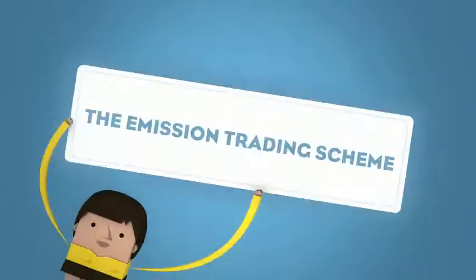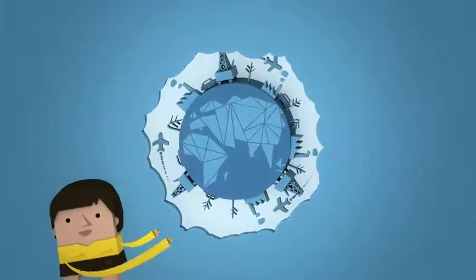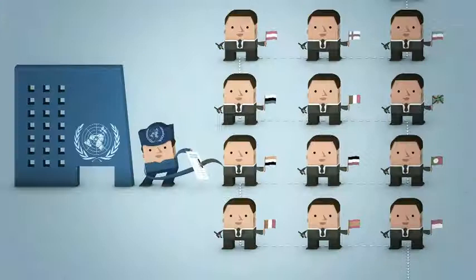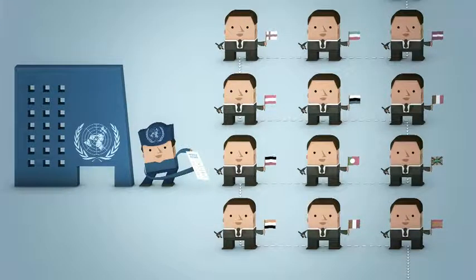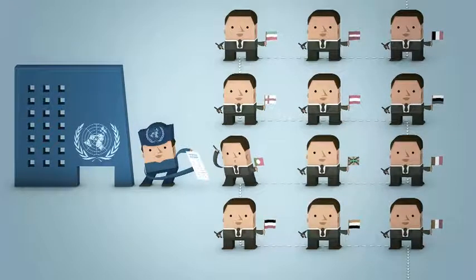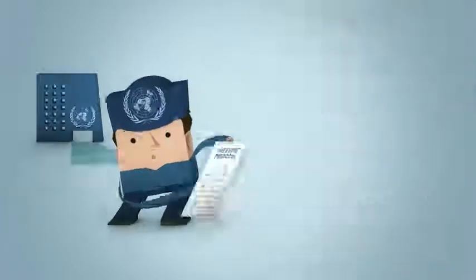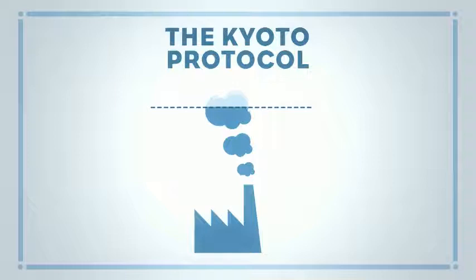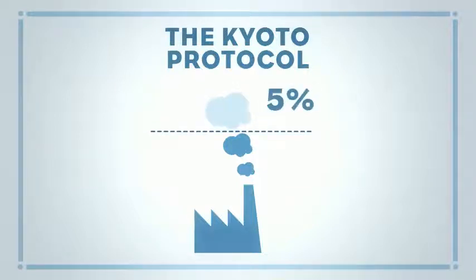So how does the Emission Trading Scheme actually work? The Emission Trading Scheme determines how much CO2 and other greenhouse gases we can emit. In 1997, most of the countries in the world signed the Kyoto Protocol. The aim of this agreement is that all industrialized countries should reduce their total emissions of greenhouse gases by at least 5% from 2008 to 2012 compared to their emissions in 1990.